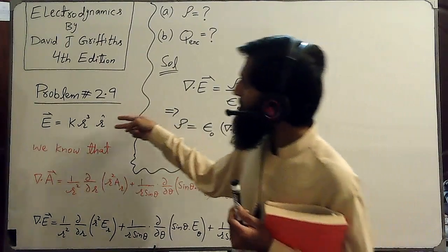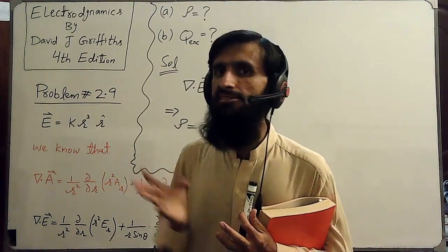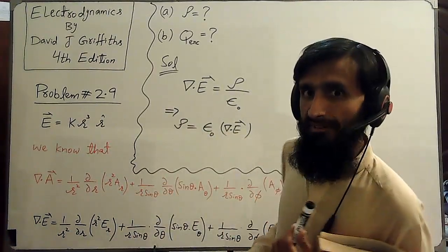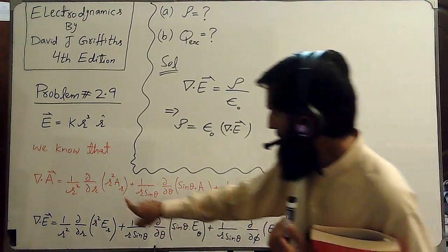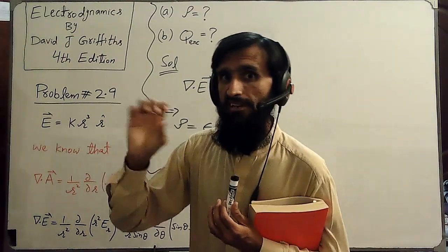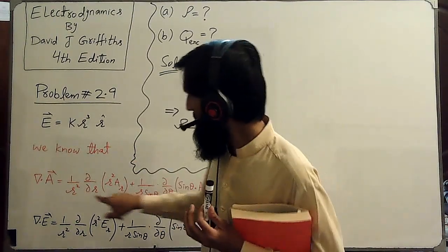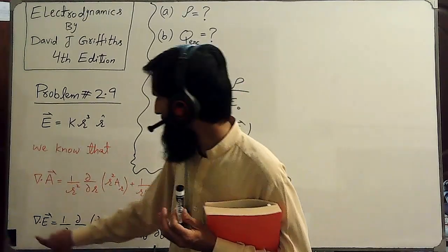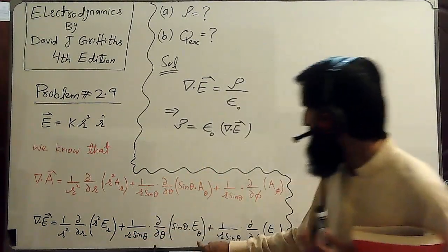Remember that this electric field vector has been given in spherical polar coordinates, so we should know the formula for the divergence of any general vector in spherical polar coordinates. You derived that formula in vector analysis, and for any general vector A it came out as shown. In this formula, A_R, A_theta, and A_phi are the components of that general vector in spherical polar coordinates. Here we want to find the divergence of vector E, so A is replaced by E, and A_R, A_theta, A_phi are replaced by E_R, E_theta, E_phi.